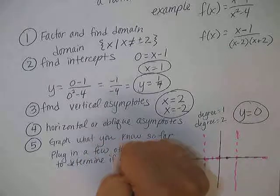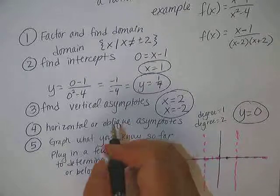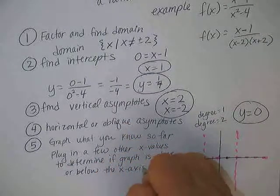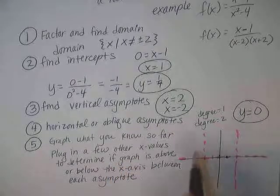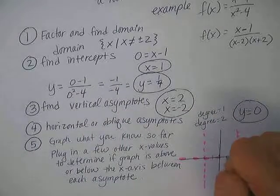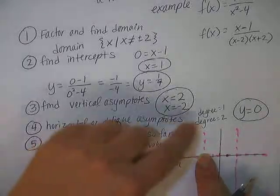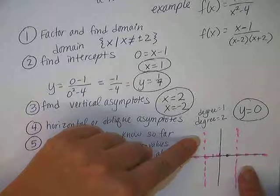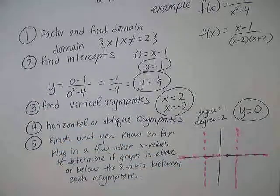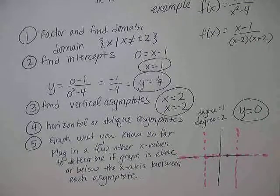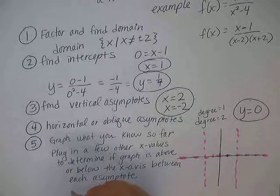So now what problem number 5 asks us to do is plug in a few other x values to determine if graph is above or below the x-axis between each asymptote. This problem actually gives us an interesting phenomenon. Remember how we said there's a horizontal asymptote at 0? And then I also just got done saying that there's an intercept at 1 that crosses that horizontal asymptote. Graphs can cross a horizontal asymptote. The purpose of the horizontal asymptote is so that these areas of the graph we know where they are not going to cross. But this section of the graph is not ruled by that horizontal asymptote and therefore this piece of the graph can cross it. So horizontal asymptotes can be crossed but vertical asymptotes will never be crossed.